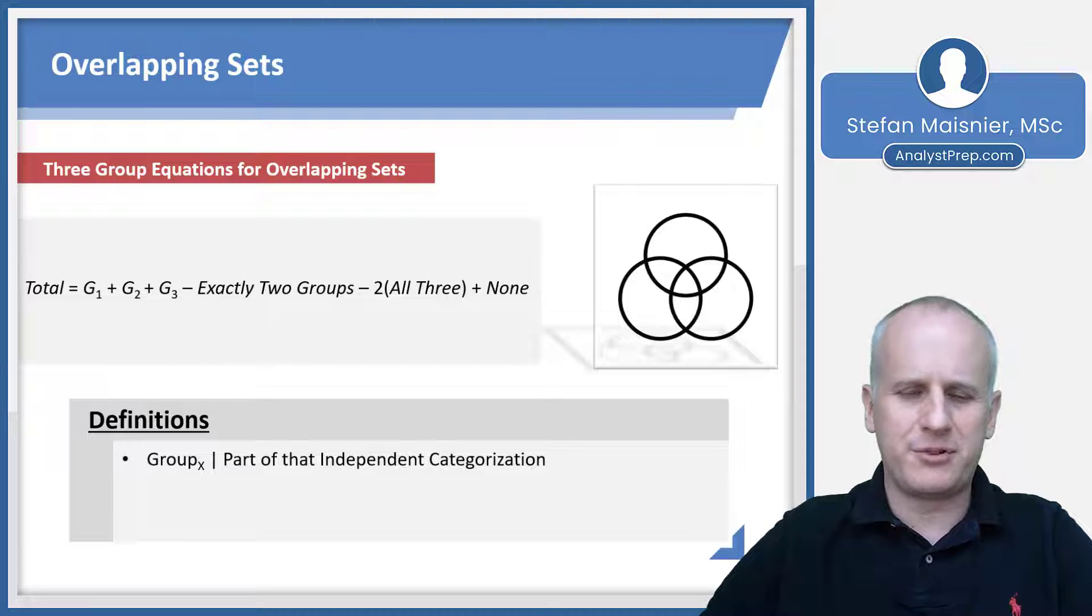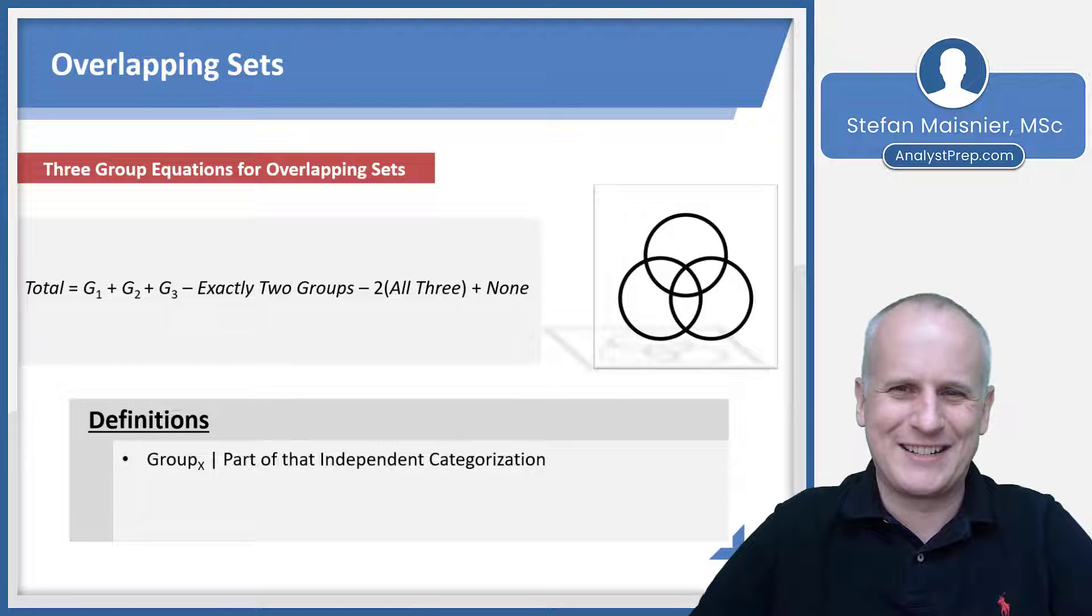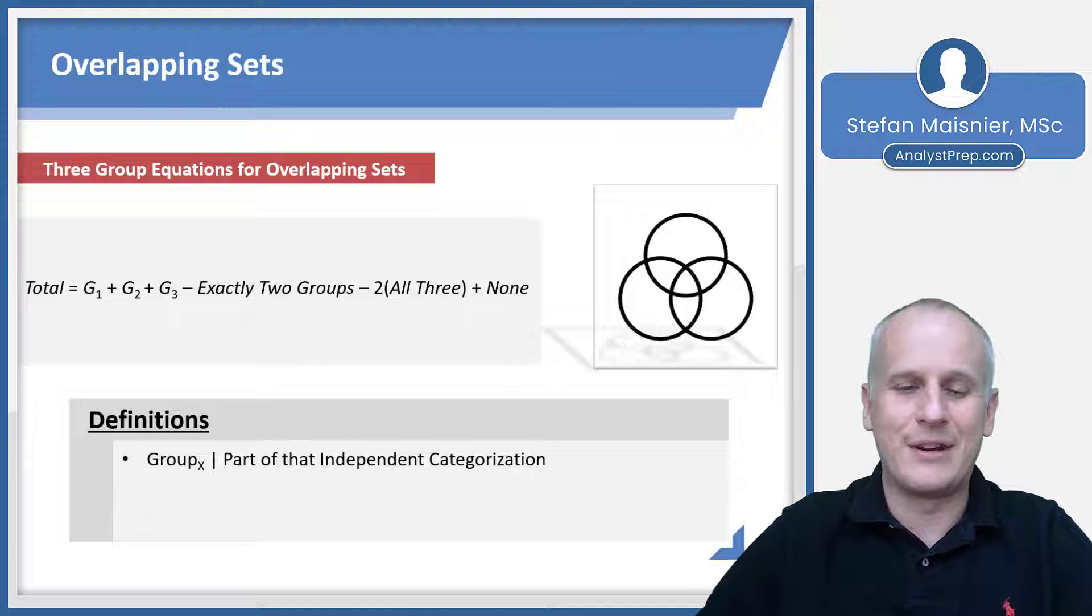So group with a little subscript is just that independent categorization. It'd be like if we had three science classes instead of the two of biology and physics. If we had biology, physics, and what's the other science? Life sciences, although I think that's kind of biology. It's been a long time since I've done science. So life sciences, biology, and physics, that would be one, two, and three.